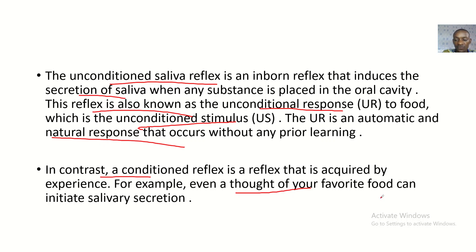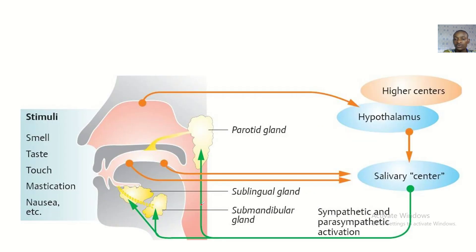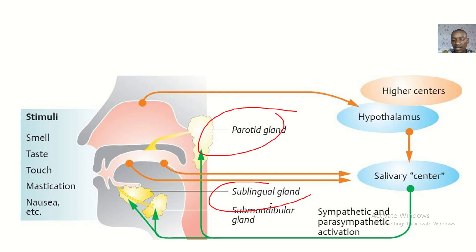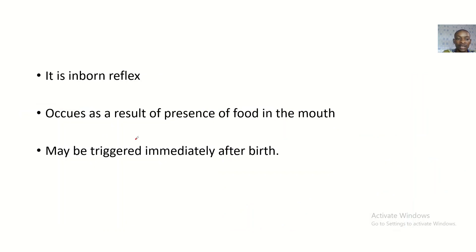Even a thought of a favorite food can initiate salivation. Just thinking about your favorite food can make you salivate. The glands involved include the parotid gland, the sublingual gland, and the submandibular gland.